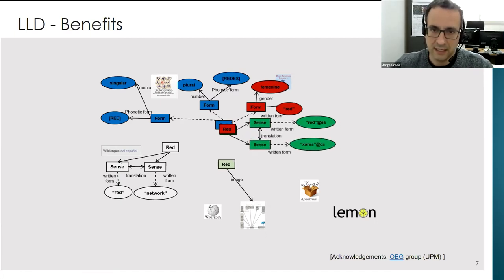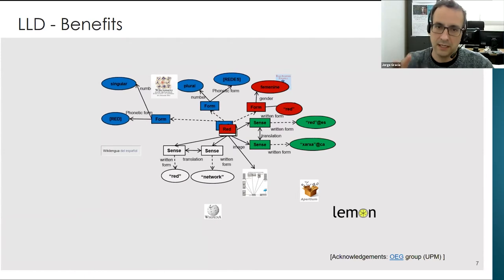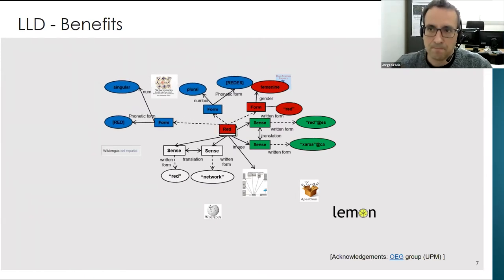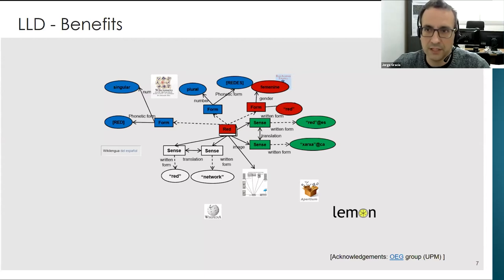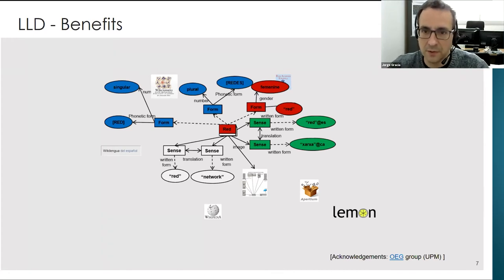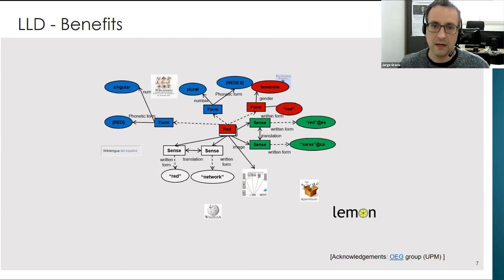...we could end up in a situation where all the information — the entire graph relating information around 'red' — can be accessed in a unified way. So even if these data sources have been created separately and for different purposes, you would have a single entry point or a federated entry point. You can interoperate between these data sources and traverse all the information related to 'red', moving from data coming from the Royal Academy to data from Apertium and so on.